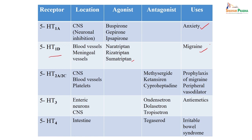Regarding platelet aggregation, the receptor 5-HT2A/2C is located in CNS and blood vessels. Some drugs developed include methylsergide, ketanserin, and cyproheptadine. Methylsergide is no longer used because it causes retroperitoneal fibrosis and has been banned. However, cyproheptadine is still used in several conditions — typically for prophylaxis of migraine, peripheral vasodilation, and also used off-label in pediatrics.